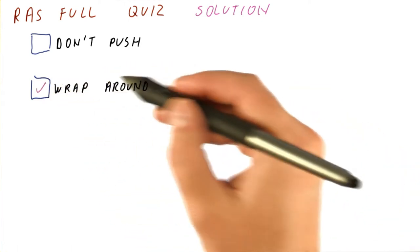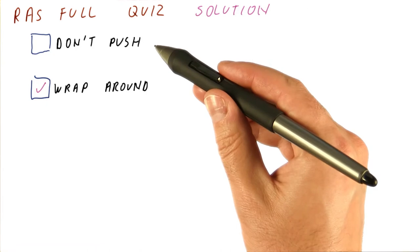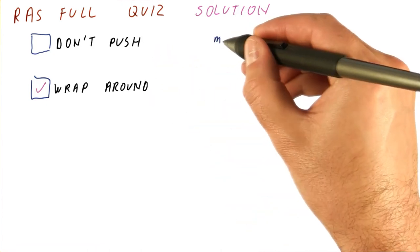It turns out that the wrap around approach is much better than the don't push approach. To see why, keep in mind that our program will look like this.